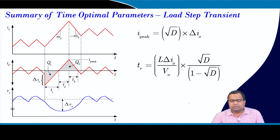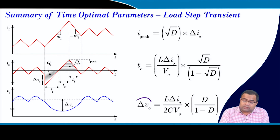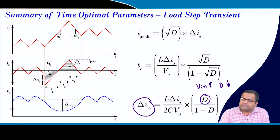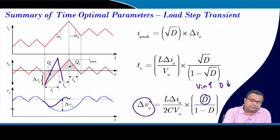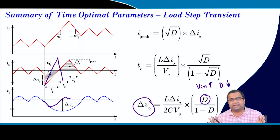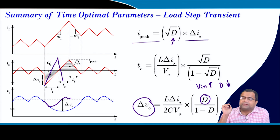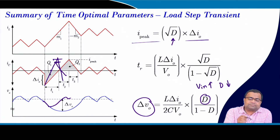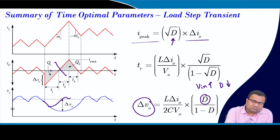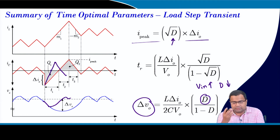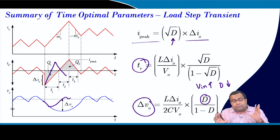Summary for time optimal load transient: the peak current is delta I0·sqrt(D), the recovery time is (L·delta I0/V0)·sqrt(D/(1−D)), and the voltage undershoot is (1/2)·delta I0·sqrt(L/C). A smaller duty ratio reduces all three quantities. For load transient, the design preference is smaller L and larger C to minimize undershoot, though we need to carefully balance efficiency, ripple, and power density. Unless a two-stage architecture is used, input voltage is typically outside our control.